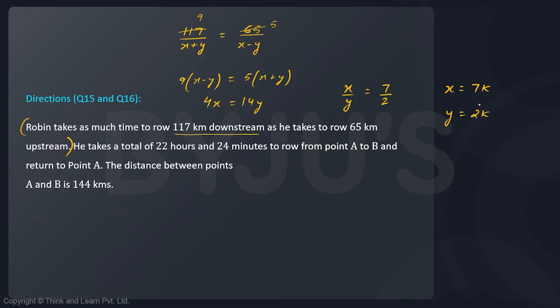Now the next statement says that he takes a total of 22 hours and 24 minutes, if I convert it into decimals 22.4 hours, to row from point A to B and then come back to point A when the distance between A and B is given as 144 kilometers. So what he will do is go 144 kilometers downstream and then come back in a total of 22.4 hours.